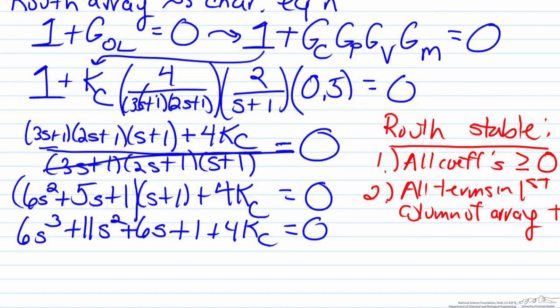If we look at our terms here, the 6, the 11, and the 6 in the cubed, squared, and first powered s's respectively, they are always going to be positive. But we do have a criteria where 1+4KC must be greater than zero.